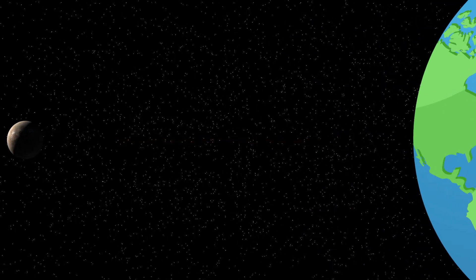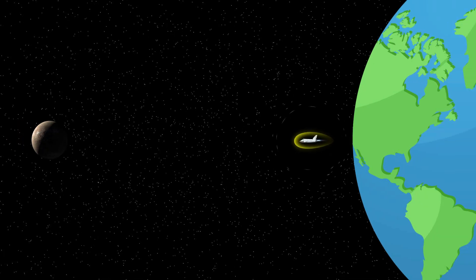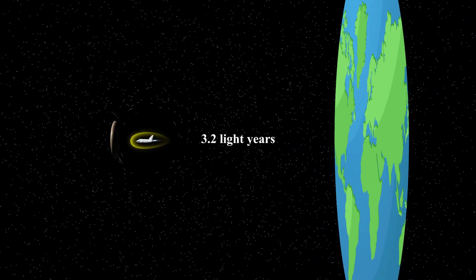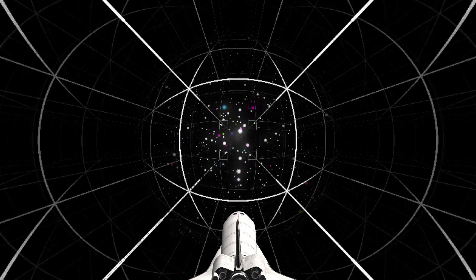For an observer on Earth, Proxima Centauri B is approximately four light-years away. However, if the spacecraft travels at 60% of the speed of light, it would take only 3.2 years for the astronauts on board to reach Proxima Centauri B.